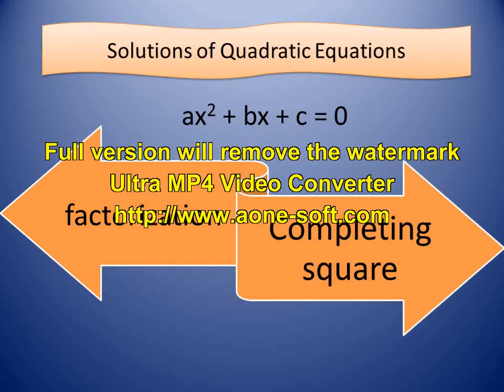Now we will discuss how to find the solutions of quadratic equations. In the factorization method, we take two numbers such that the sum of these two numbers is equal to the value of b, and the product of these two numbers is equal to the product of a and c. We will apply this process to our example.